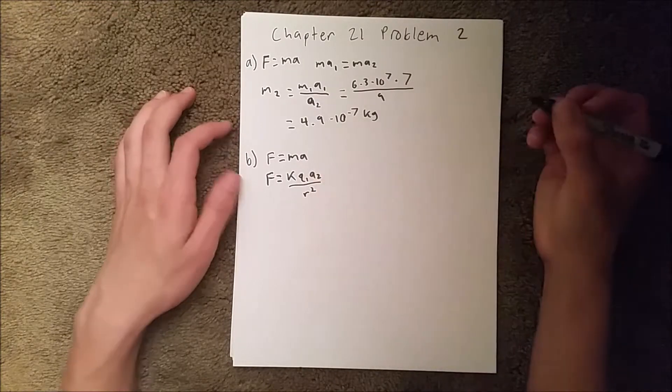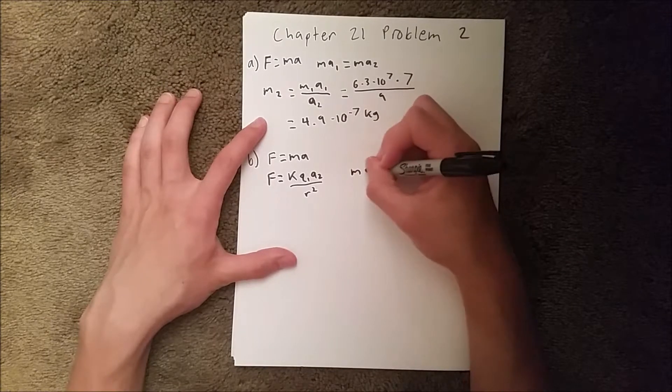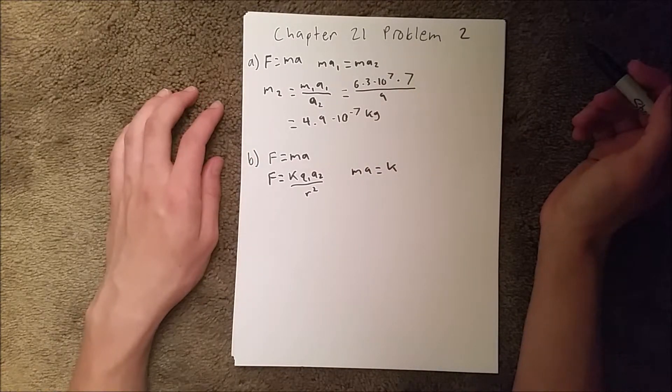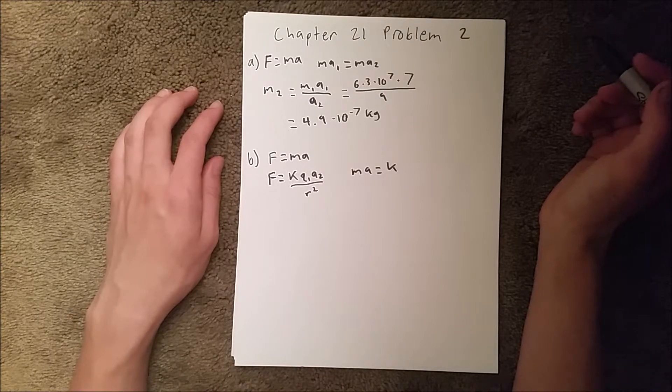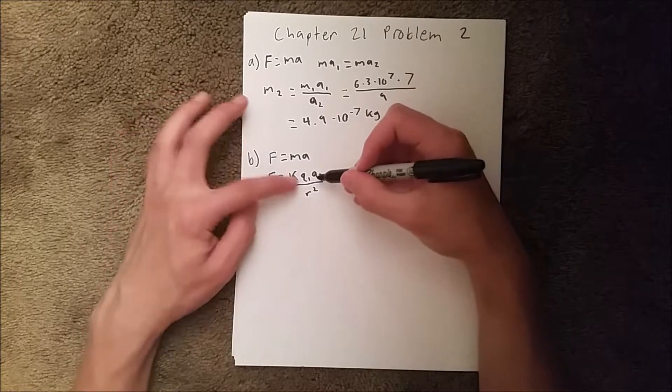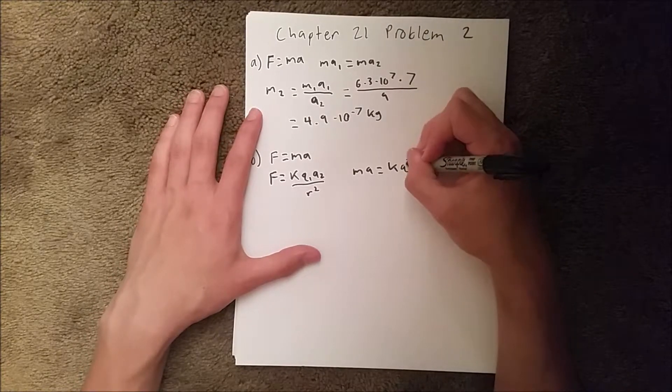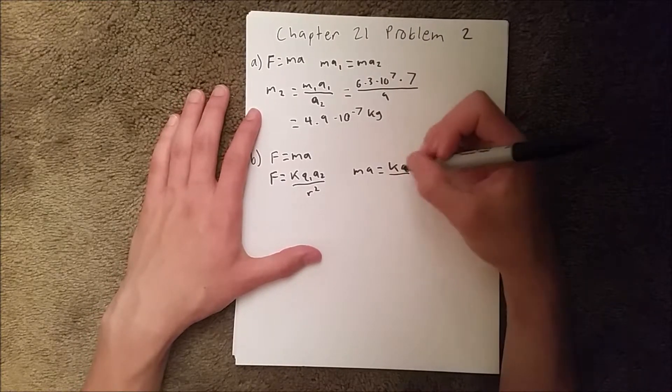We can set these two equal to each other. Since we're only trying to find the charge on one particle and they're the same, we can write this as k times q squared over r squared.